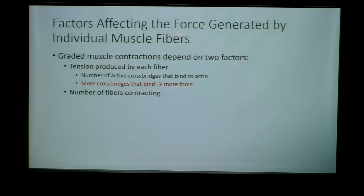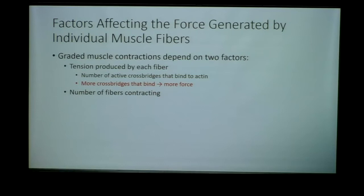The amount of tension produced by a single muscle fiber really depends on how many active crossbridge cycles are formed. As I say crossbridge cycles, you should be thinking about actin and myosin. How many actin and myosin interactions are formed in that muscle is what dictates the strength of the contraction, the duration of the contraction, the velocity of the contraction. The more crossbridges that we form, the more force and tension we will generate.